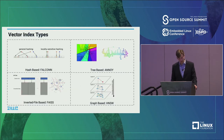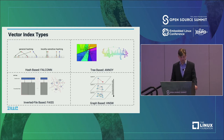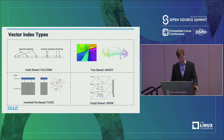There are four main vector index types. First is hash-based, where the main library is Faiss. With locality-sensitive hashing, unlike a regular hash where you minimize conflicts, here you actually maximize conflicts. You first run your data through the hashing algorithm to get your buckets, and when searching, you run the query through the hash to find which bucket it falls in to find the most similar results.